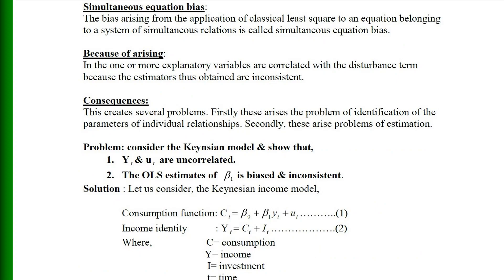Simultaneous equation bias is the bias arising from the application of classical least squares to equations belonging to a system of simultaneous relations. This occurs because one or more explanatory variables are correlated with the disturbance term, making the estimators obtained inconsistent. This creates two main problems: firstly, the problem of identification of parameters of individual relationships, and secondly, problems of estimation.